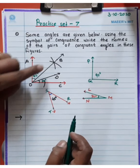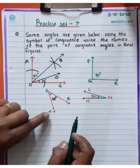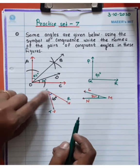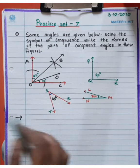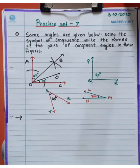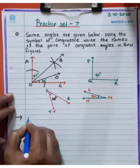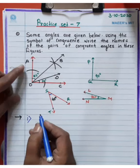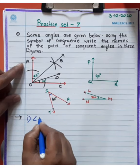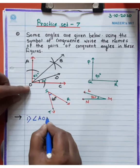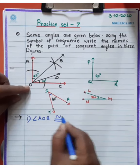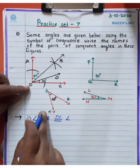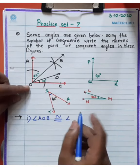Angle AOB and angle TSR — these two angles are congruent to each other. So here write down: First pair — angle AOB congruent angle TSR.